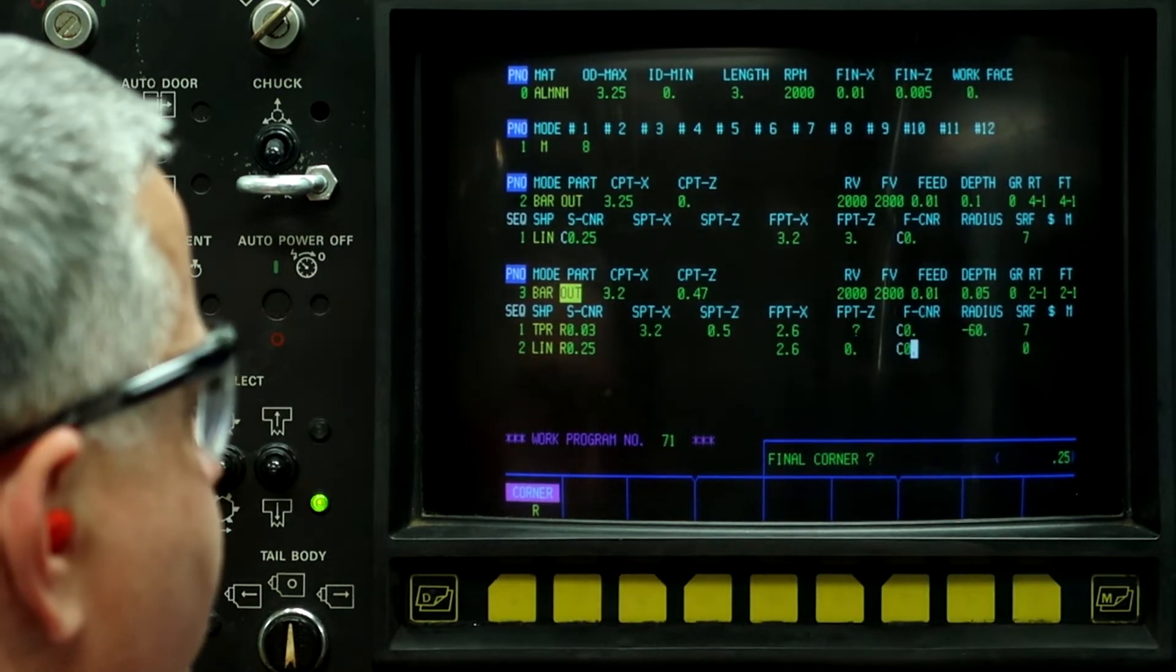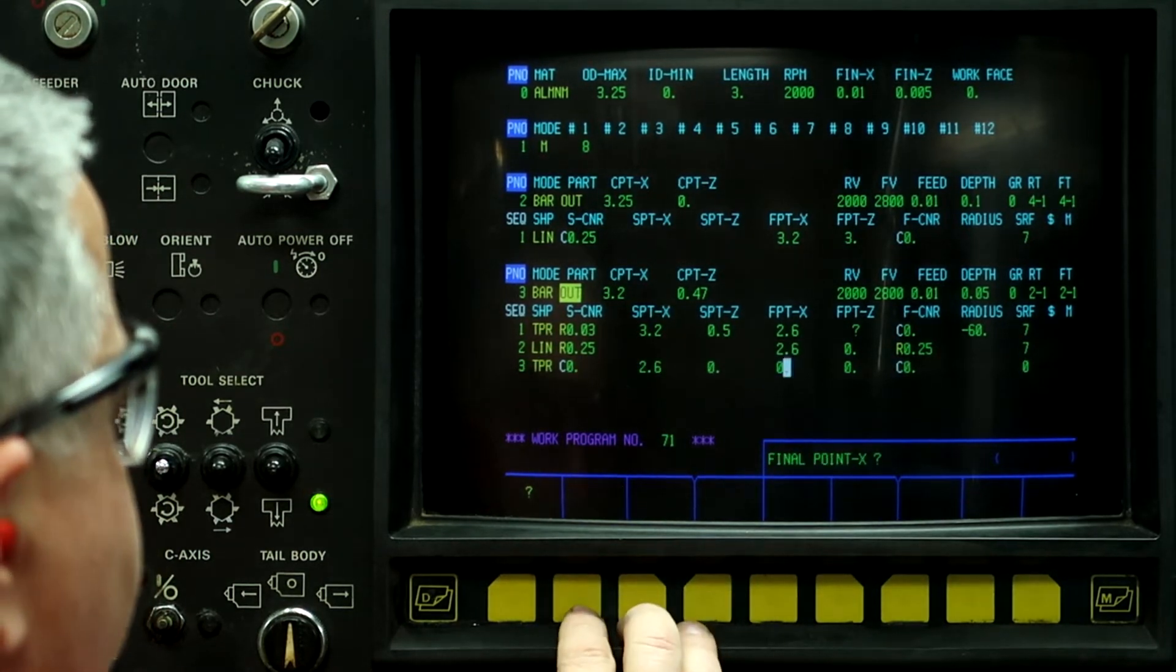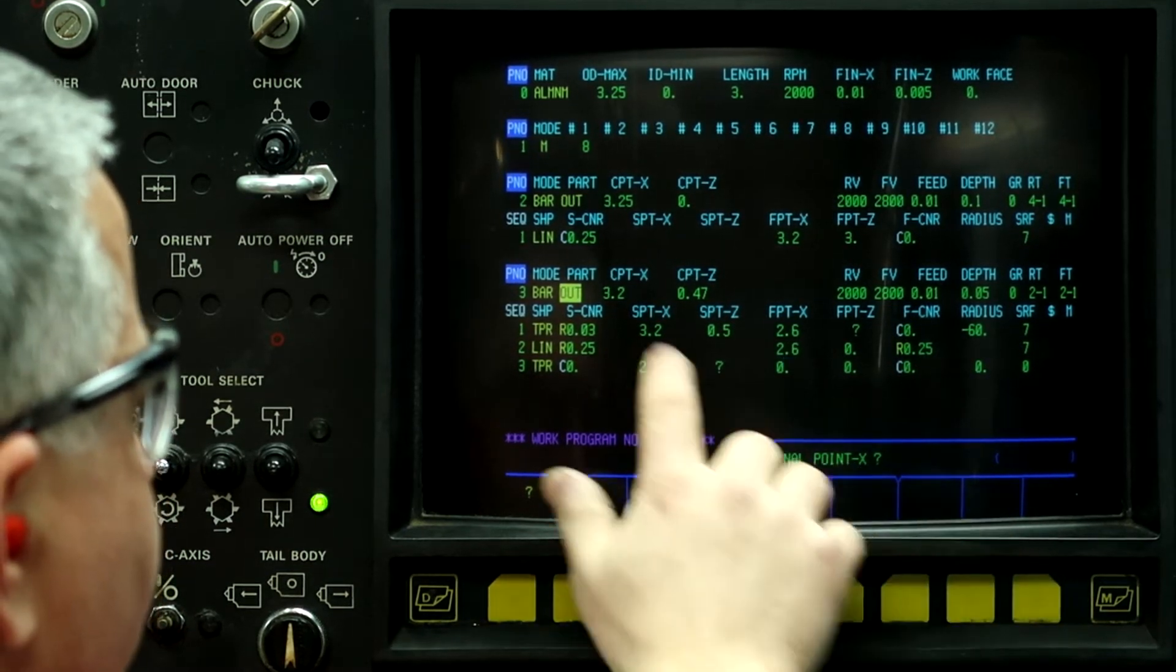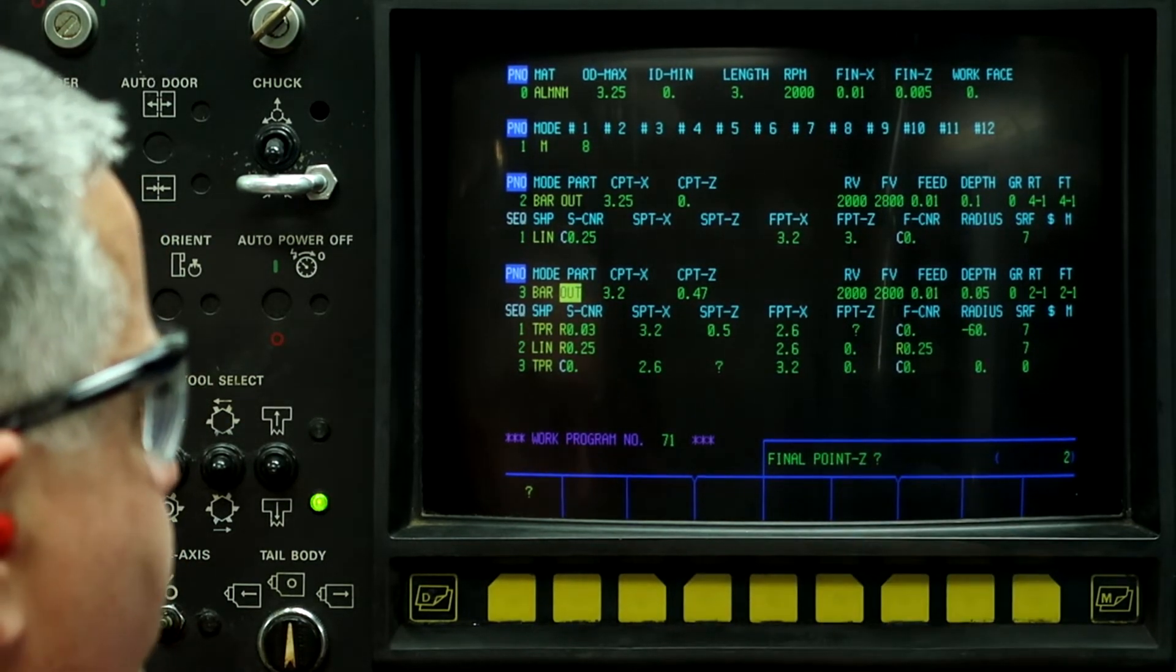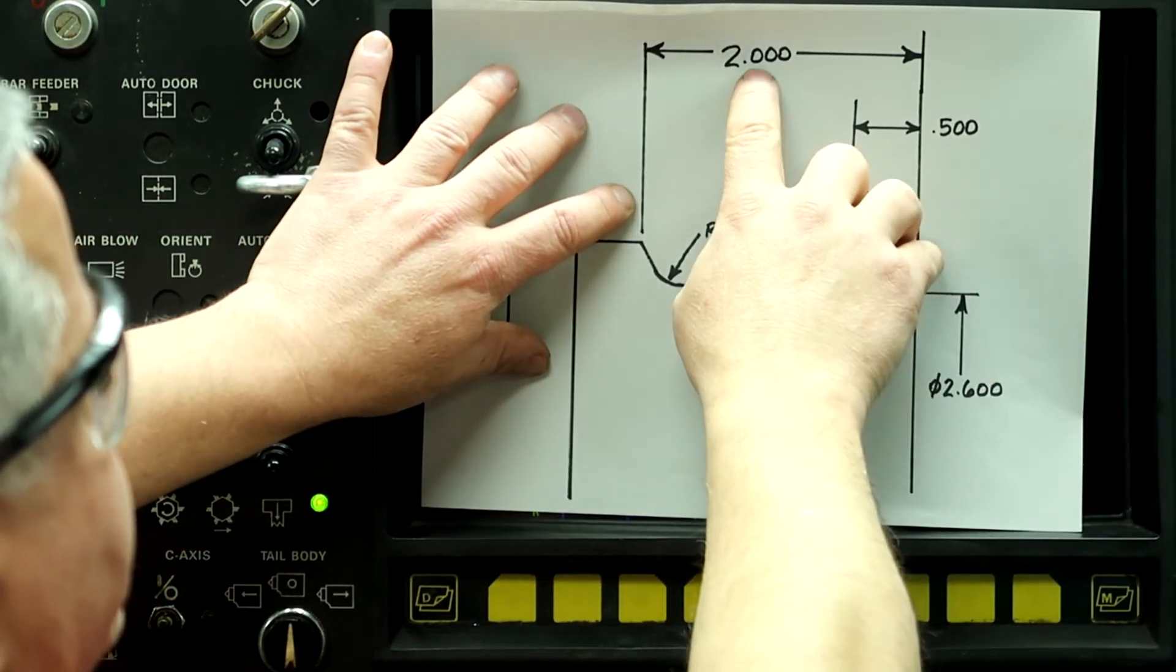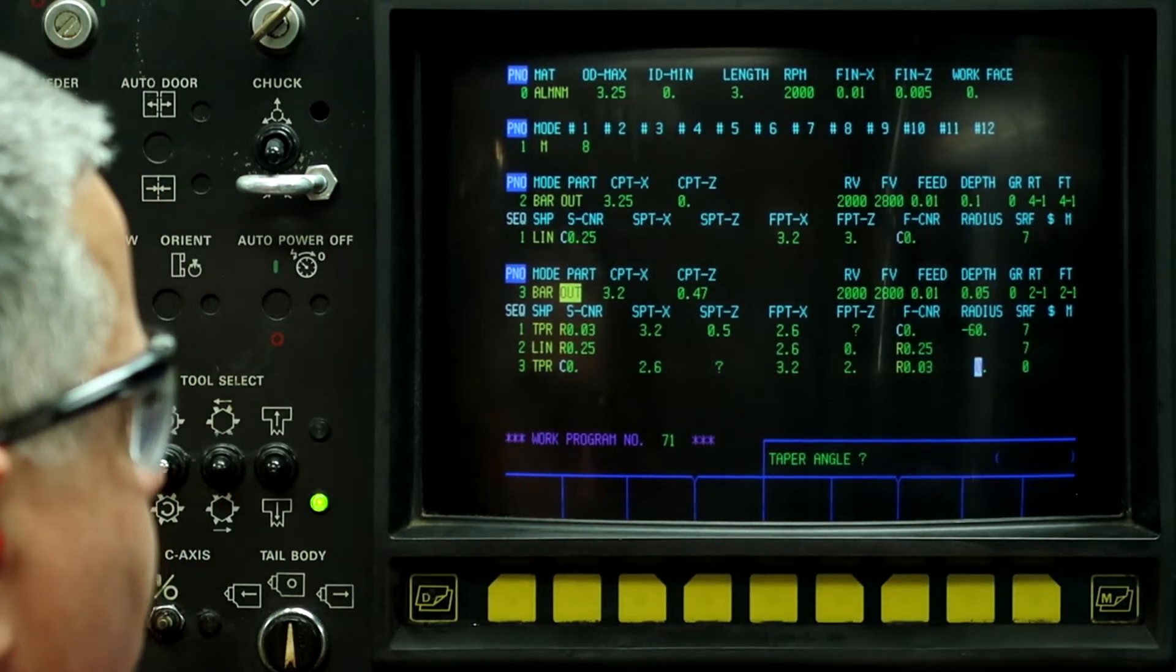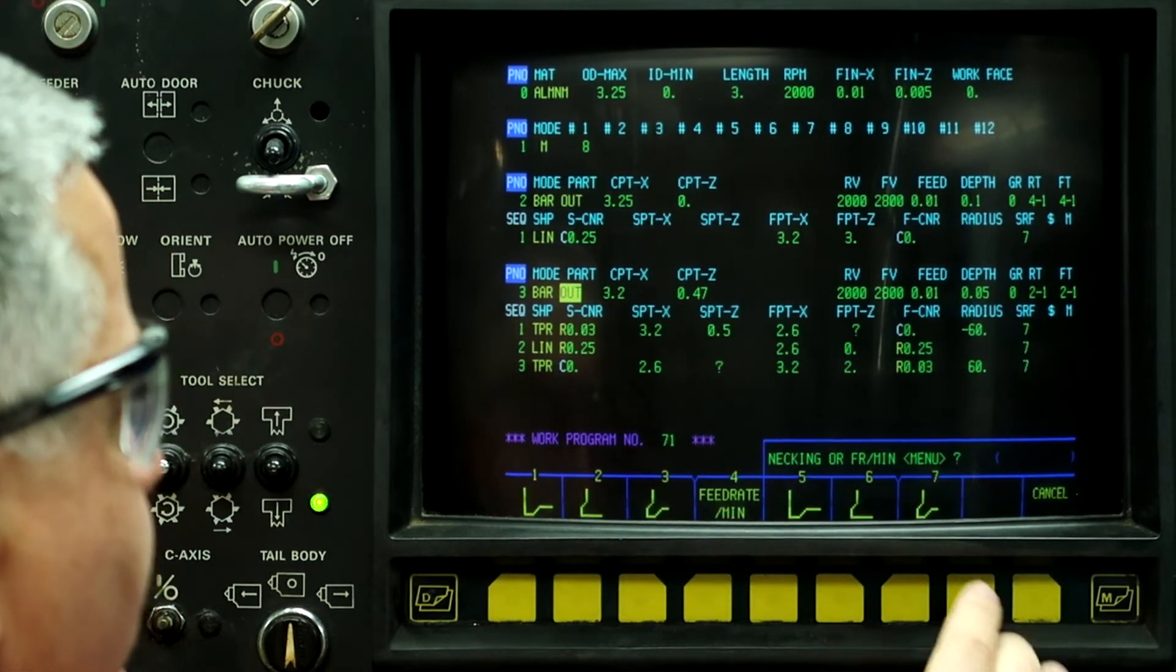So final corner. Radius 0.250, 7, taper, continue. And now this is where we're going to put in the question mark. Final point on X is 3.2 inches. Final point on Z is going to be 2 inches. Here.